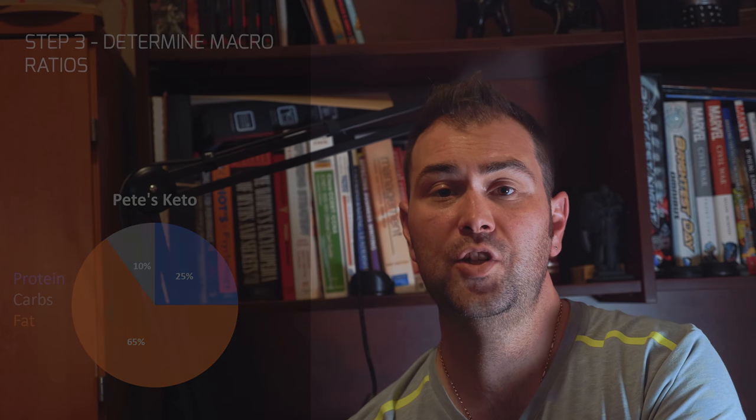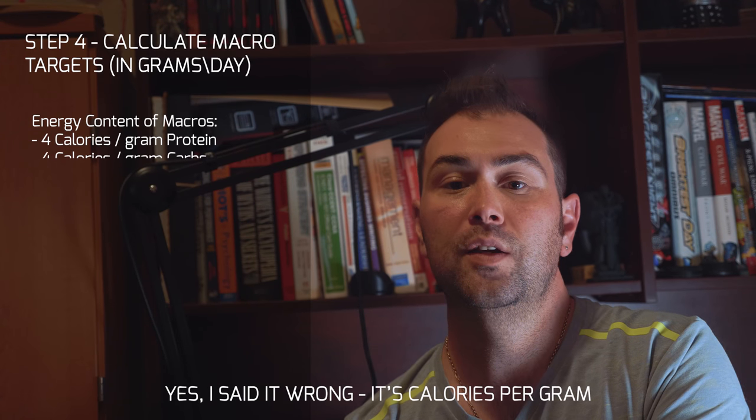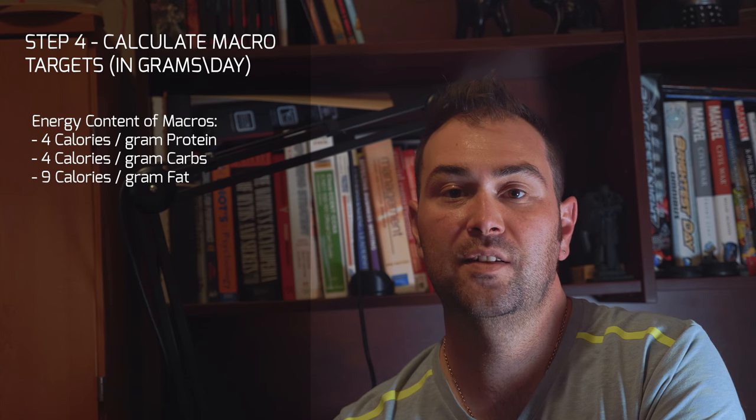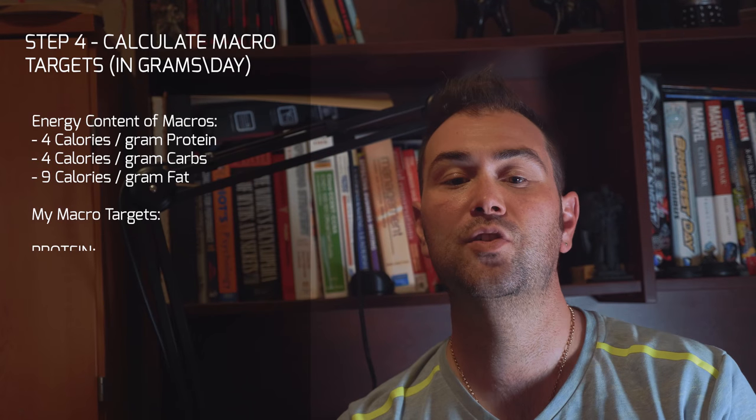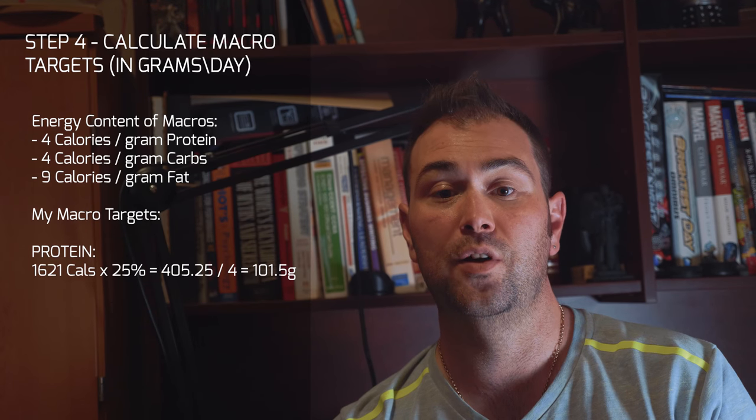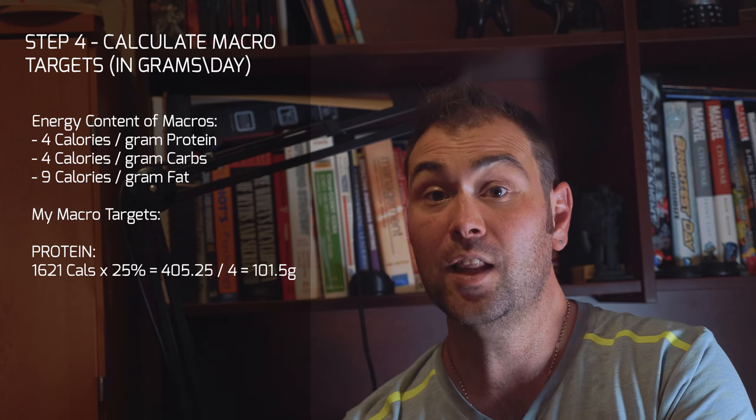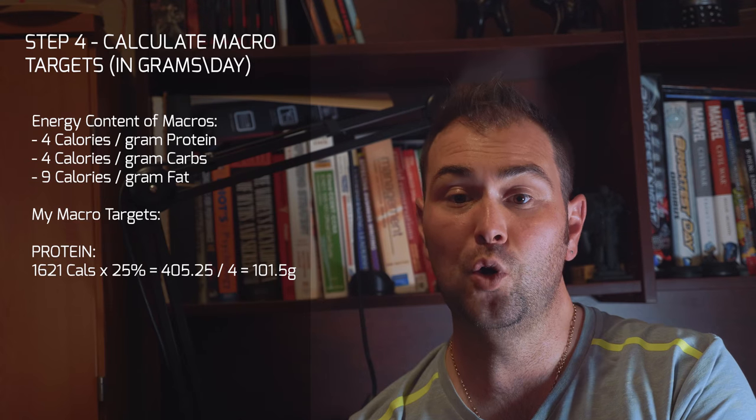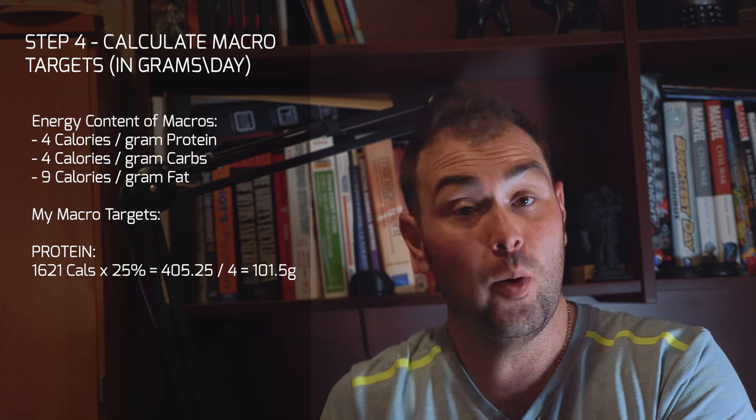So now we use those ratios and we fold that back into our daily energy intake that we've calculated to lose weight. Don't forget, you can use a formula of four calories per gram for protein and carbohydrates, and nine calories per gram for fat. So some basic division, I'm only going to talk about my example just to make it easier in terms of the math on the screen. So my protein, I need 25% of my 1,621 calories to come from protein. So 25% of 1,621 is 405.25 calories. That's how many calories I need to eat from protein each day. If I divide that by four, that gives me 101.5 grams of protein that I need to eat per day. So now I know what my protein requirements are.